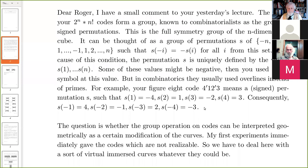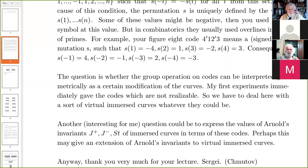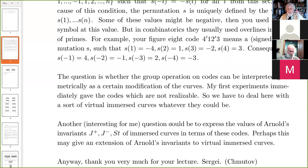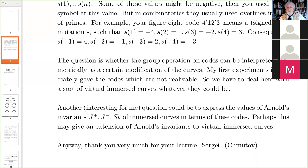The question is whether this group operation on codes can be interpreted geometrically as a certain modification of the curves — they actually define the curves when they're realizable. There's something called Arnold's invariants J+, J−, and St of immersed curves, and these should be definable in terms of these permutations. I haven't actually tried hard to do that, but presumably some of you could. Thank you for that contribution, Sergei.